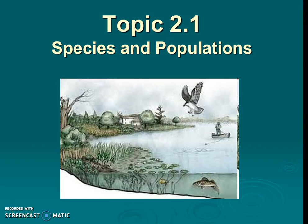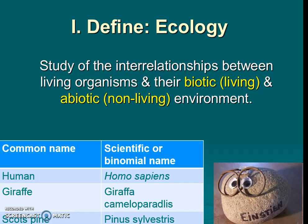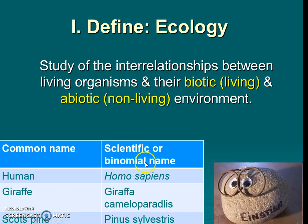Hello, IB environmental students. Today we're going to be doing topic 2.1, species and populations. Let's start by defining ecology, which is the study of the interrelationships between living and non-living things, which we know is called biotic and abiotic. Do know that you must know the difference between a scientific name, which uses the binomial naming system — always written in italics, where the first word is uppercase and the second word is lowercase.